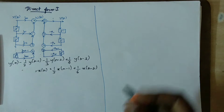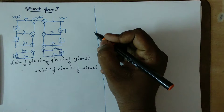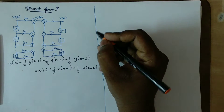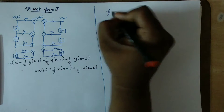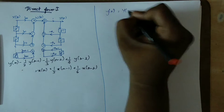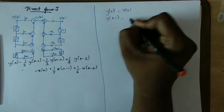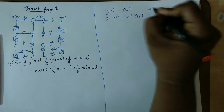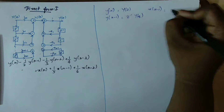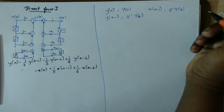First, on the Direct Form 1, to sum up: Y(n) is present. So Y(n) in z-domain is Y(z). Y(n-1) becomes z^(-1) · Y(z). Similarly, X(n-1) becomes z^(-1) · X(z).